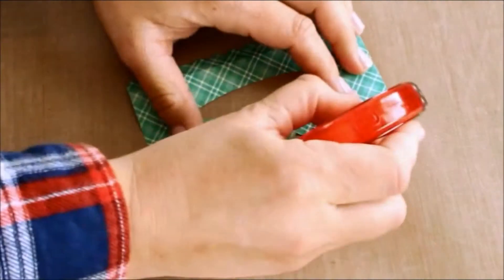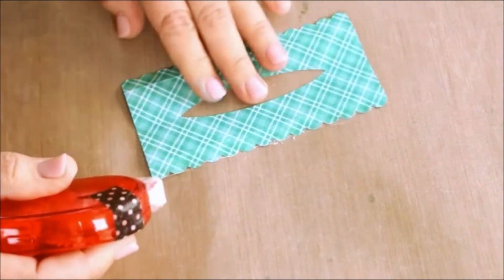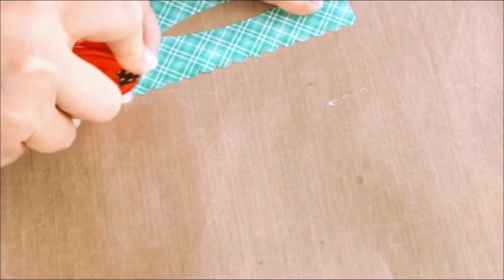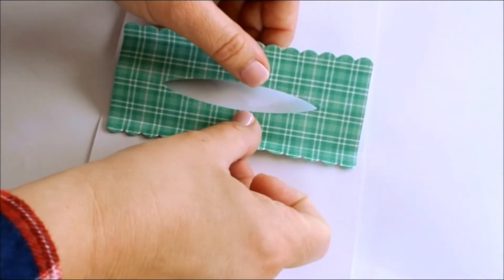Over at my craft sheet, I'm running some adhesive along the back of the skinny scallop bits. These are the only parts that need to be stuck down. And they get stuck down right at the middle fold inside the card.